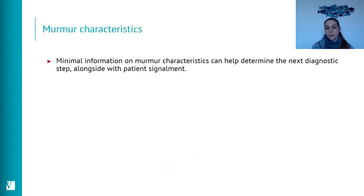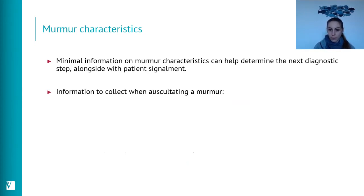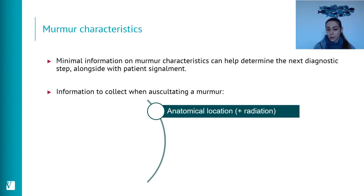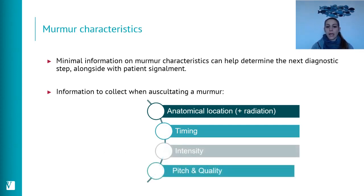Murmur characterization is important because it can help us determine what to do next. The information we need to collect when we auscultate a murmur includes: anatomical location and whether it irradiates, timing (systolic or diastolic), intensity, and pitch and quality — things we don't tend to document as often as we should.